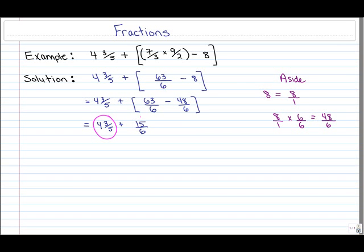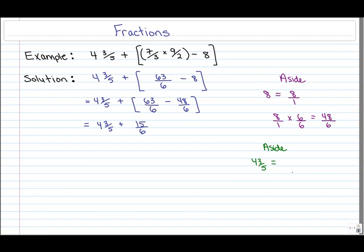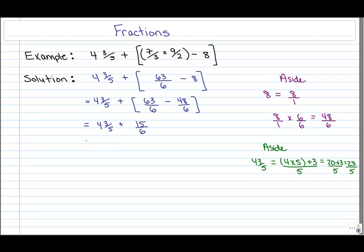We need to add this mixed fraction to this improper fraction. To do that, we first convert the mixed fraction to an improper fraction. So let's convert 4 and 3 fifths: we multiply 4 times 5 and add 3, then put this over the denominator of 5. This reduces to 20 plus 3 over 5, which gives us 23 over 5. So our mixed fraction is equivalent to the improper fraction 23 over 5.